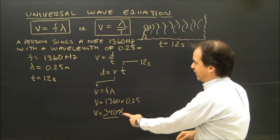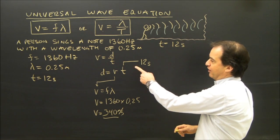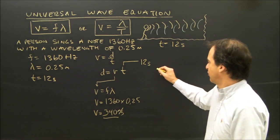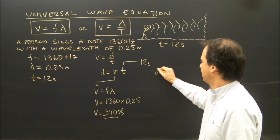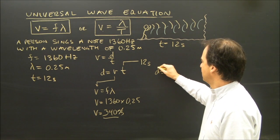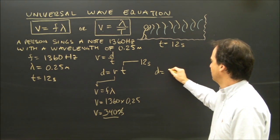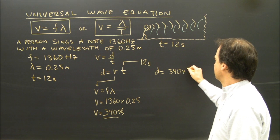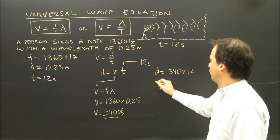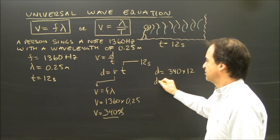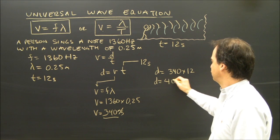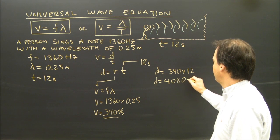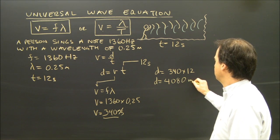I have the speed of travel and how long it travels, so I'm looking for the distance. D is equal to V times T: 340 times 12. The distance the wave traveled was 4080 meters.